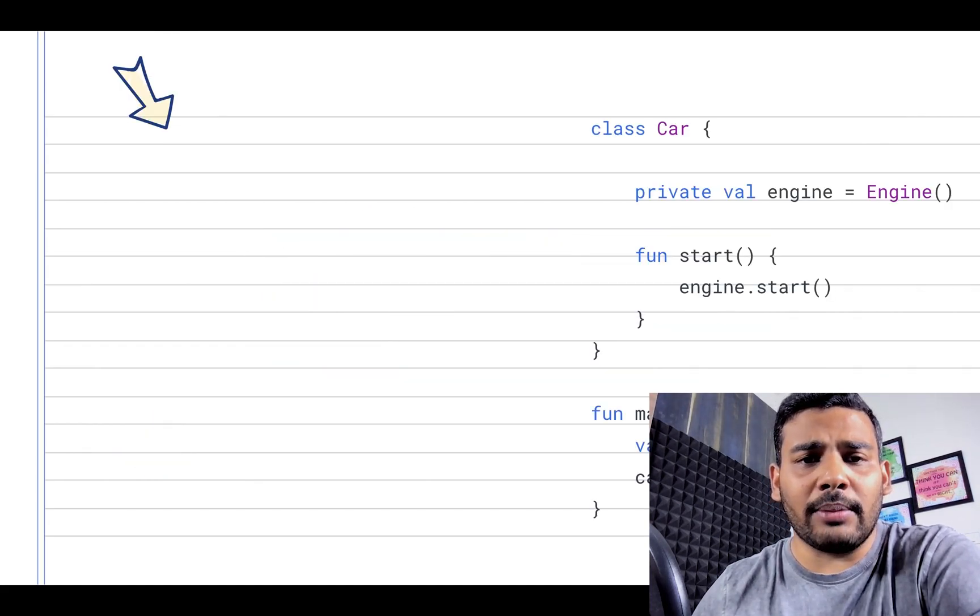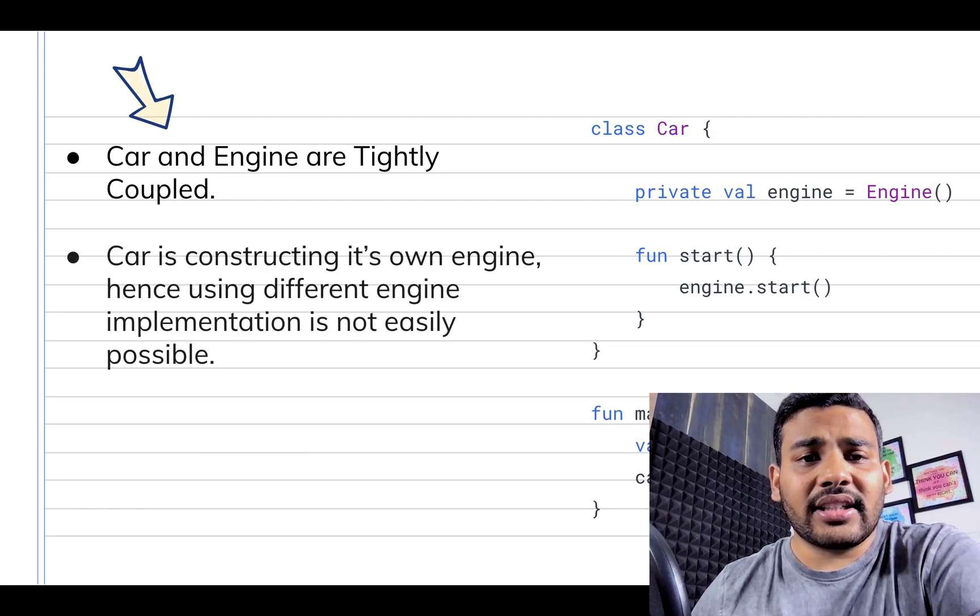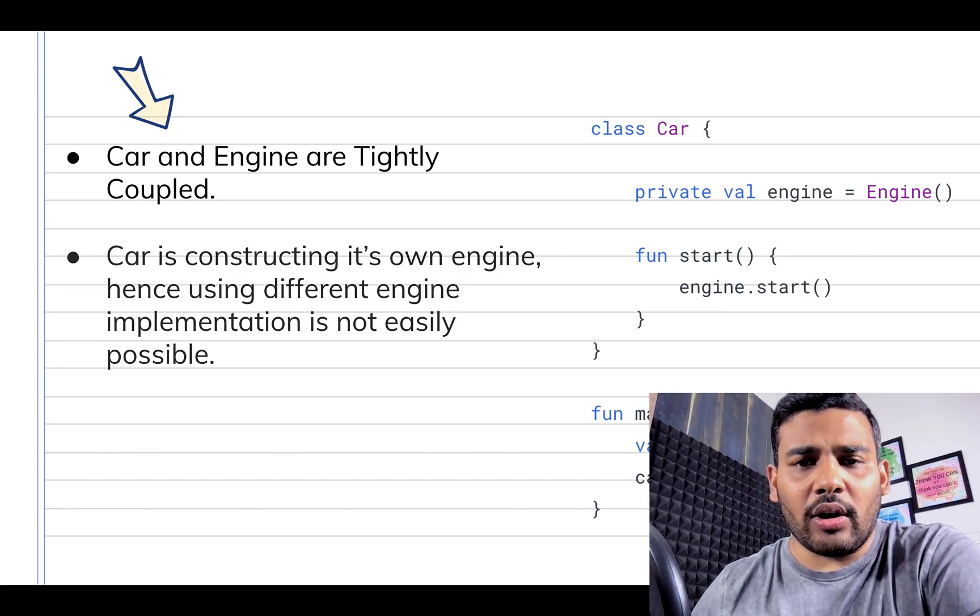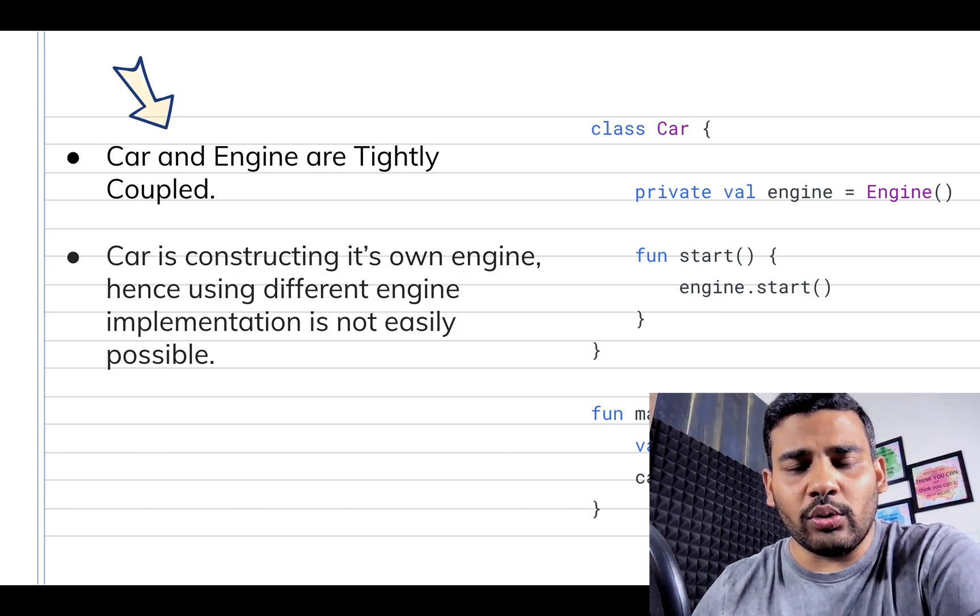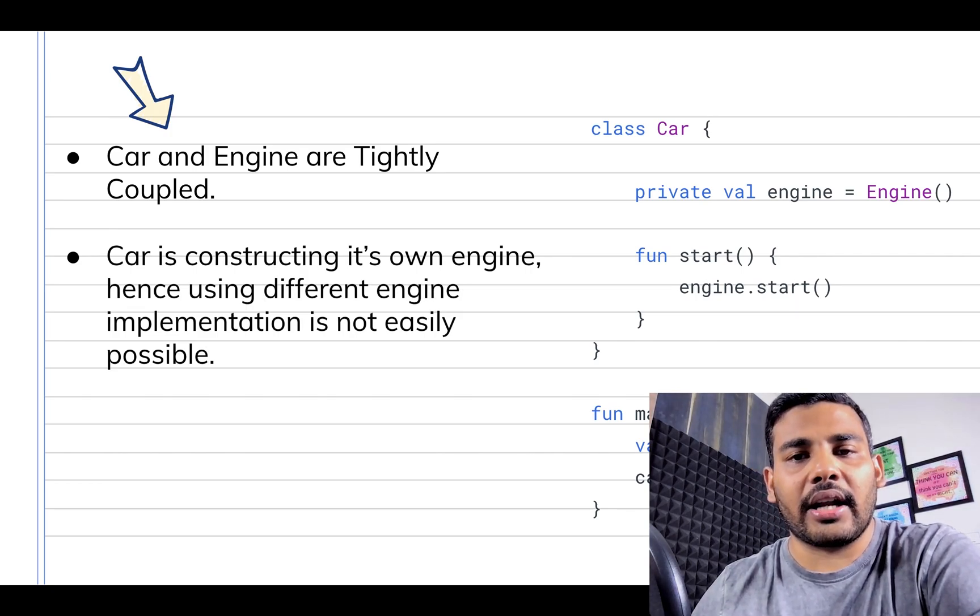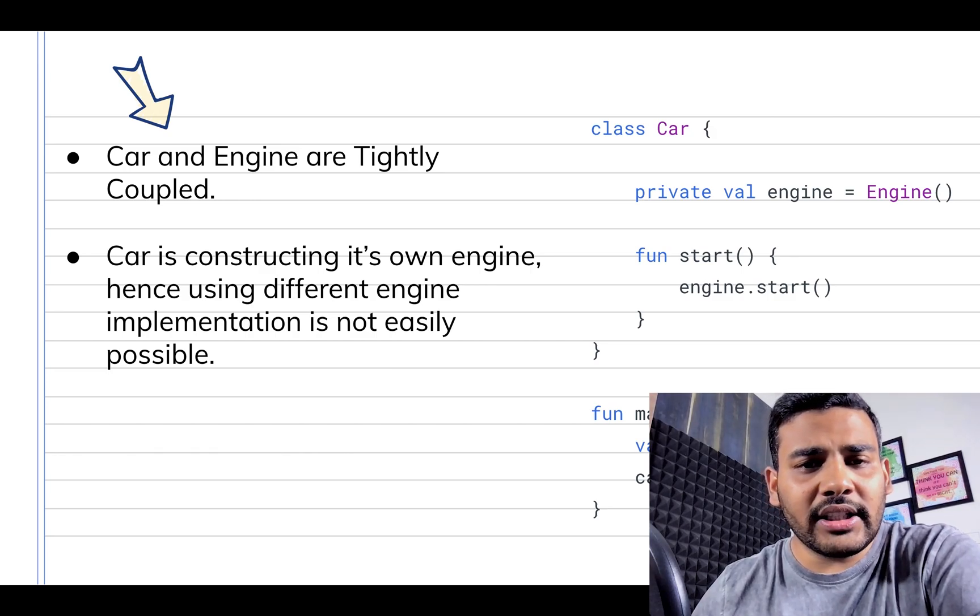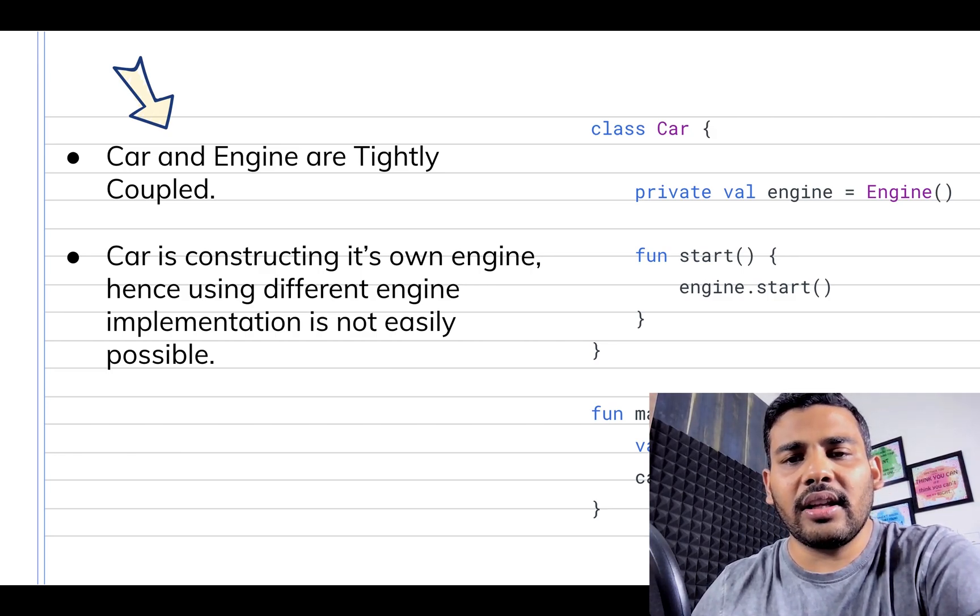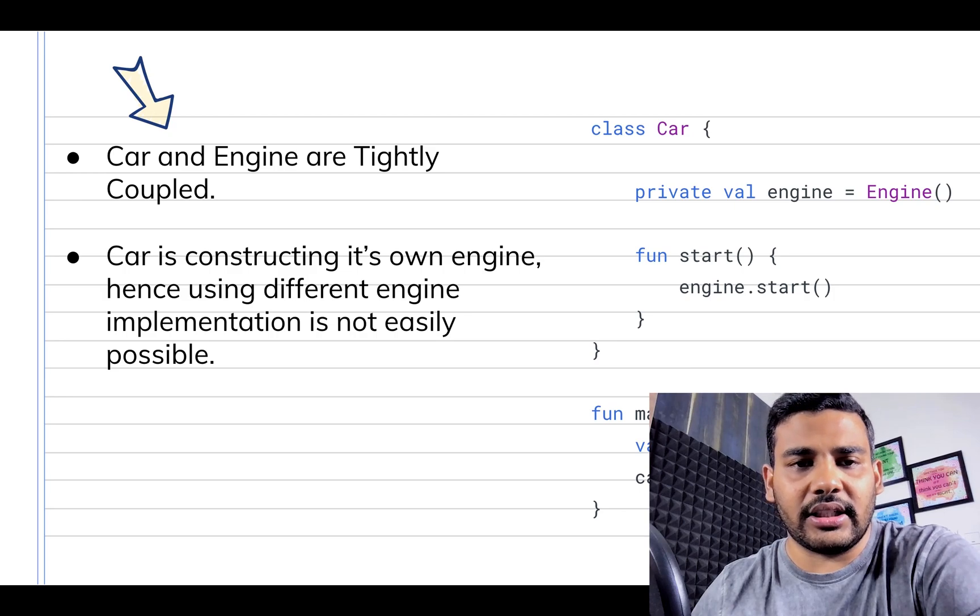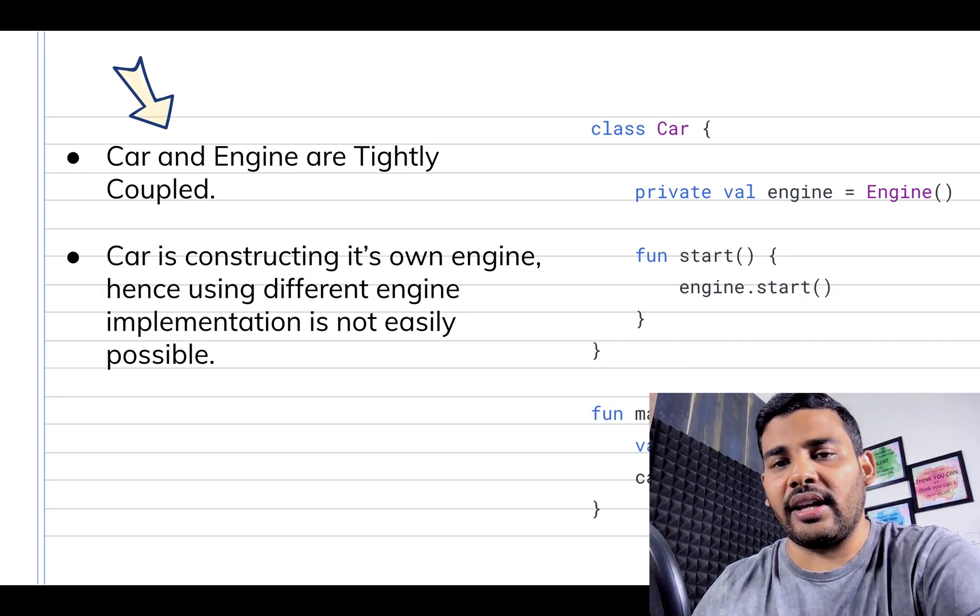The first problem is Car and Engine are tightly coupled. As Car is constructing its own Engine, we cannot, or we cannot easily, use different implementation of Engine for Car. For example, we have to create two cars, one is for gas engine and another one is for electric engine, then reusing the same Car here is not easy in the given code.